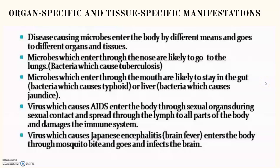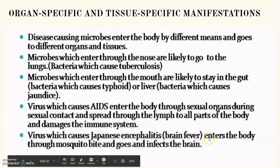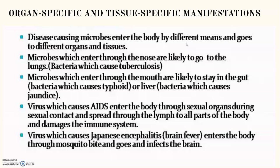Today we are starting with organ-specific and tissue-specific manifestations. Disease-causing microbes enter our body by different means and go to different organs and tissues. They can enter through the nose, mouth, sexual organs, or through mosquito bites. When microbes enter through the nose, they most likely go to the lungs and affect our respiratory system, like tuberculosis.